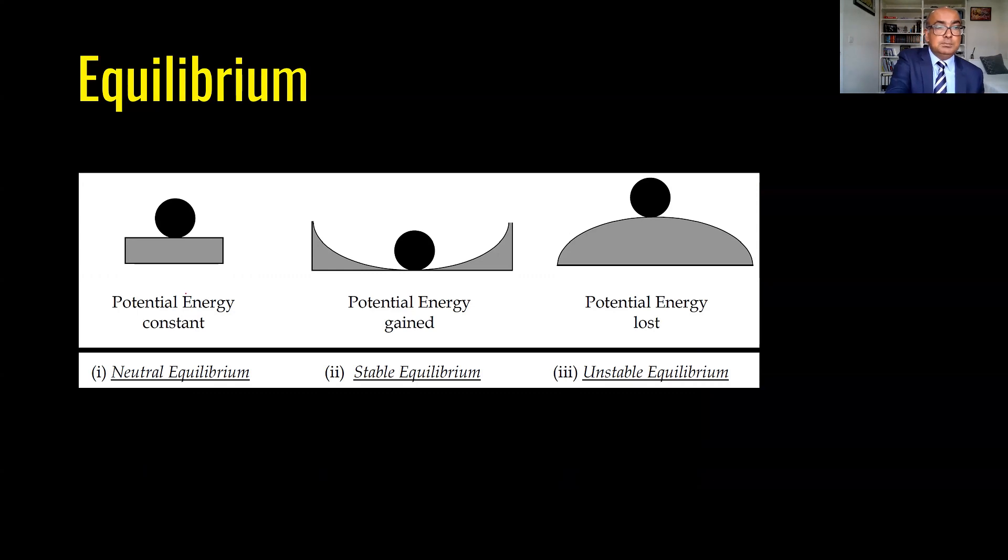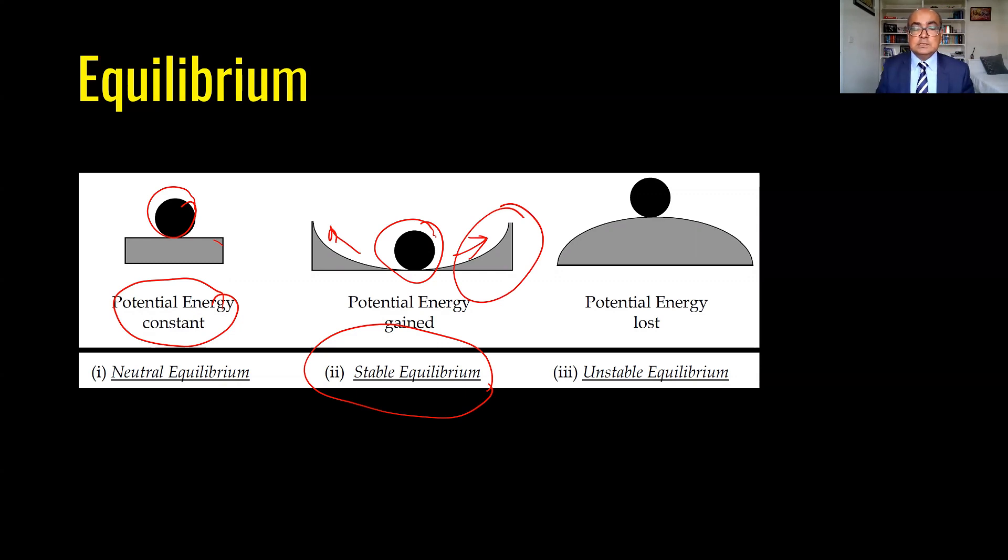Neutral equilibrium is when potential energy is constant. Here a ball is resting on a surface which is a flat surface. The second is stable equilibrium where potential energy is gained. Here ball cannot go left and right because of the geometry of the surface. This is called stable equilibrium. The third one is where ball is resting on a surface which has tendency to move left or right so potential energy is lost here. This is termed as unstable equilibrium.